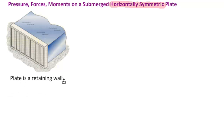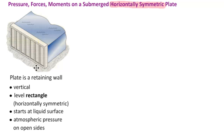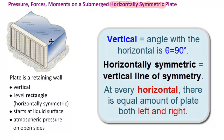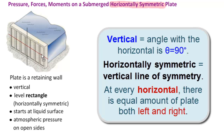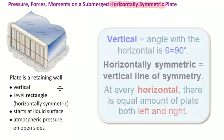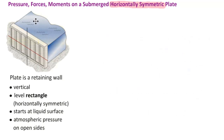Here's an example. Our plate here is this retaining wall. Its properties: number one, it's vertical — the angle with the horizon is 90 degrees. It's a level rectangle, meaning it's level with the horizon, and it's horizontally symmetric because it's a rectangle. Here is our line of symmetry, and at every point along this horizontal, we have the same amount on the left as on the right. This particular plate starts at the liquid surface and goes down. We have atmospheric pressure at the top and on the wall, and since there's atmospheric pressure on the open sides, that allows us to use gauge pressure and not absolute.